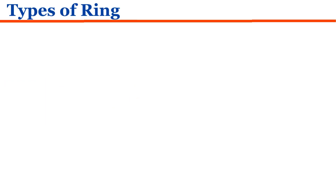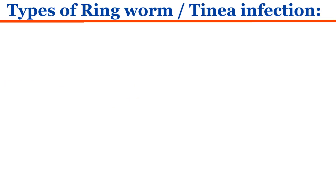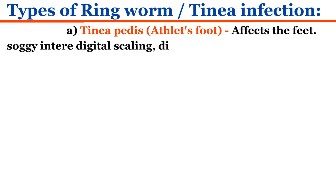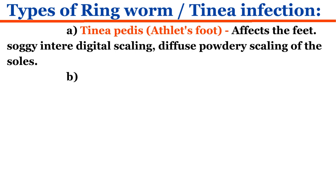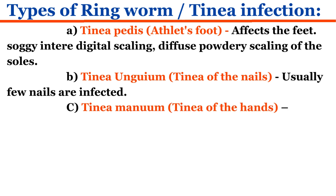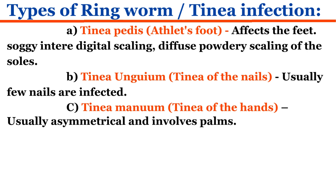Types of ringworm tinea infection. A. Tinea pedis, athlete's foot, affects the feet. Presents with soggy interdigital scaling and diffuse powdery scaling of the soles. B. Tinea unguium, tinea of the nails; usually few nails are infected. C. Tinea manuum, tinea of the hands; usually asymmetrical and involves the palms.